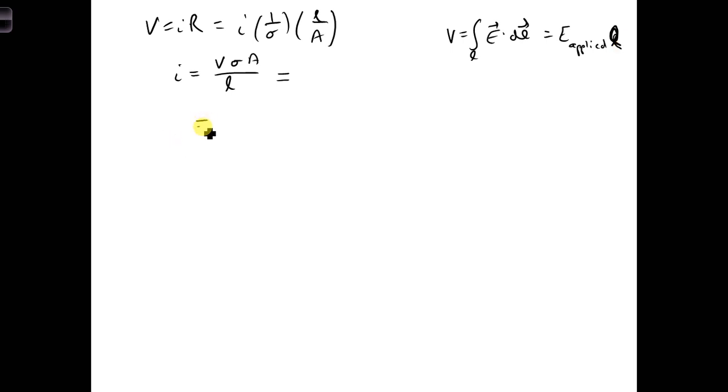So plugging that in here, we get E applied times L, I'm putting that in for V, sigma A is still there, and L is in the denominator.